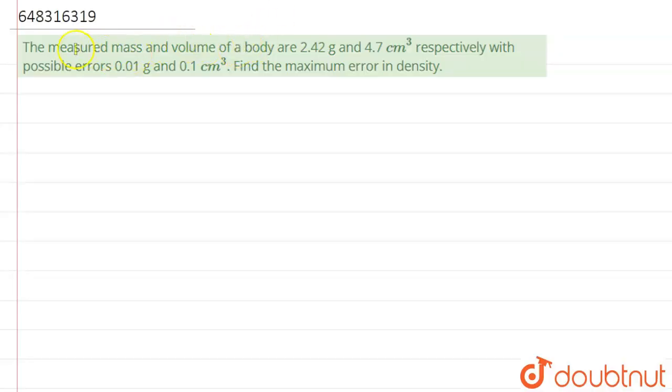Well, hello students. Now we're going to see this question. The question says that the measured mass and volume of a body are 2.42 grams and 4.7 centimeters cube respectively. The possible errors are 0.01 grams and 0.1 centimeter cube. Find the maximum error in density.